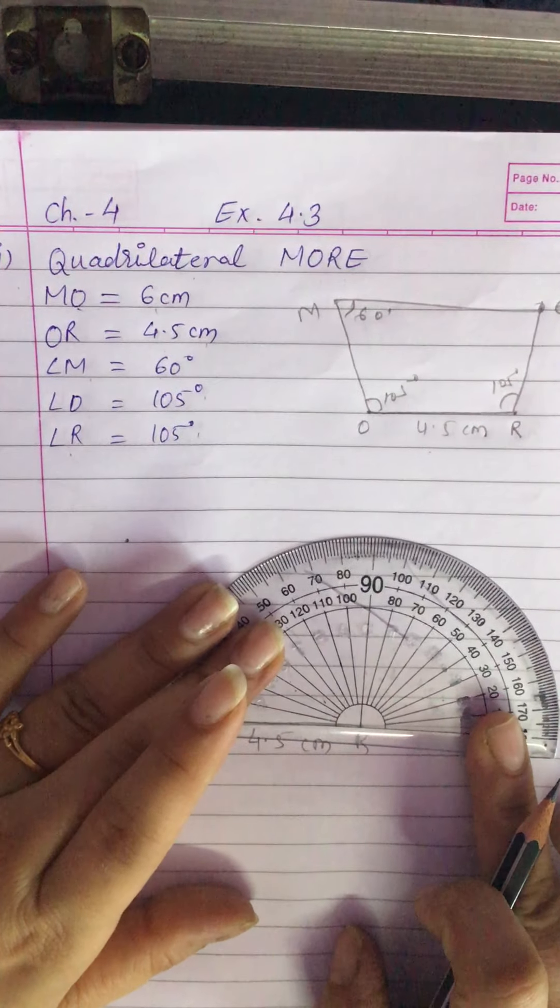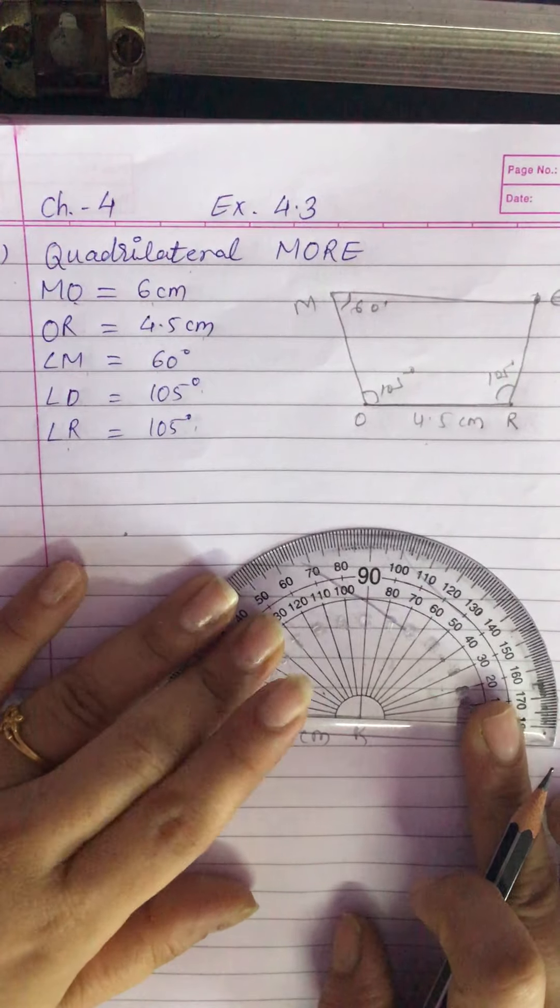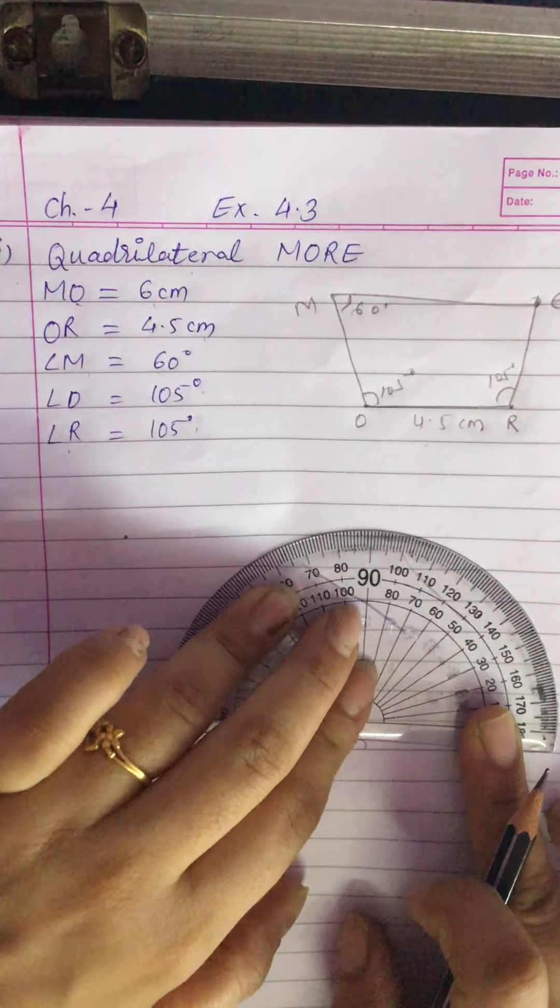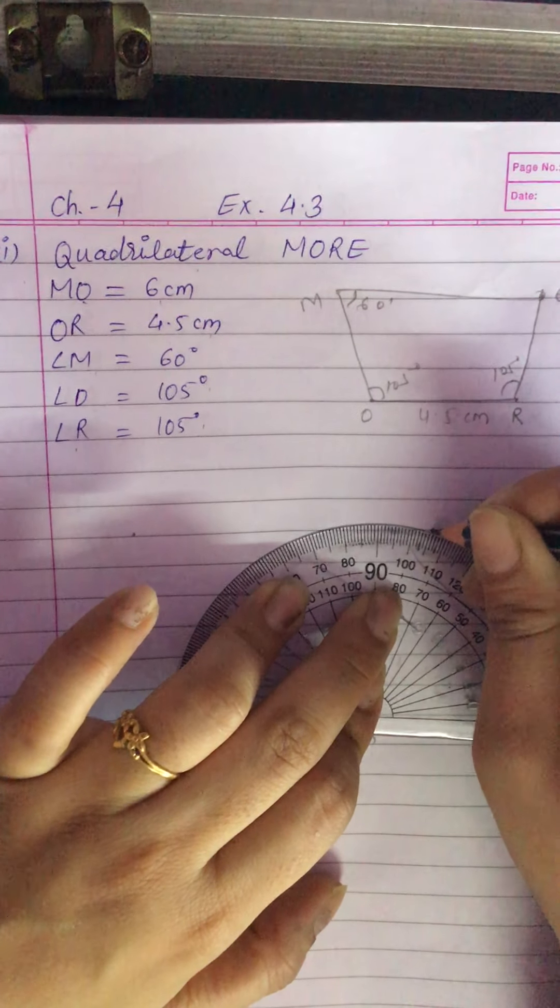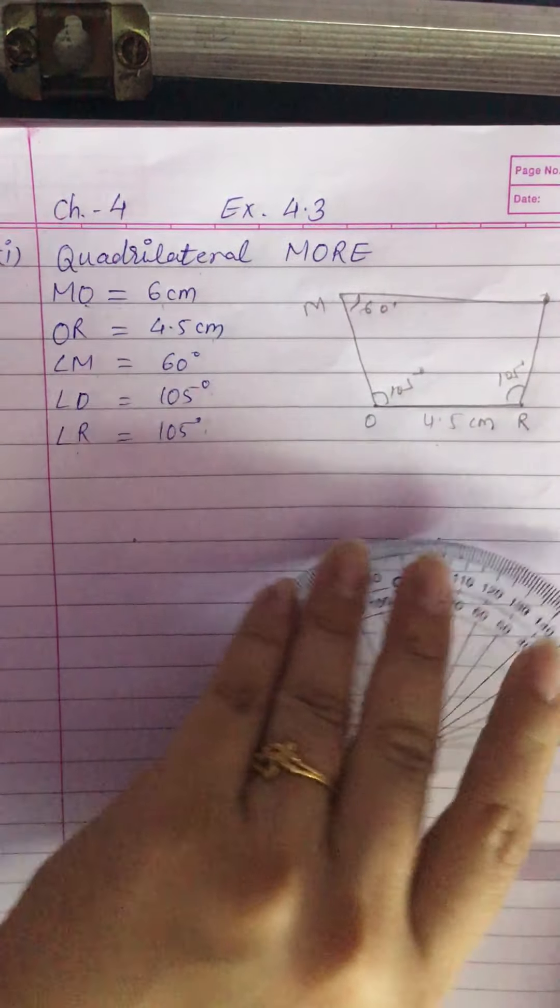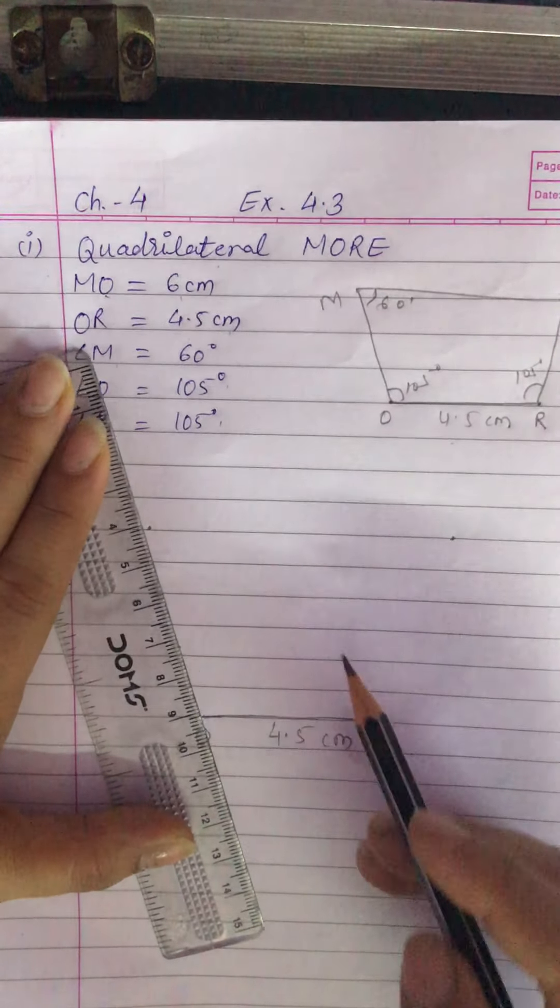Now with the same process, taking R as a center, again draw an angle of 105 degrees. Join this ray.